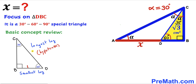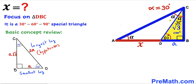In a special 30-60-90 triangle, the longest leg (hypotenuse) is always twice the smallest leg. If the smallest leg is lowercase a, then the longest leg is 2a and the third leg is a times square root of 3. In triangle DBC, segment DB is the smallest leg equal to a, hypotenuse CD is the longest leg equal to 2a, and the third leg BC equals a times square root of 3.